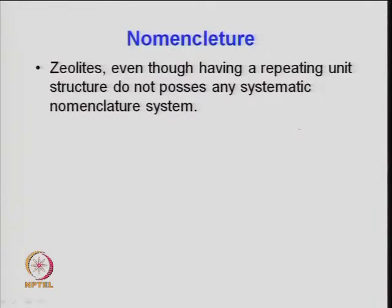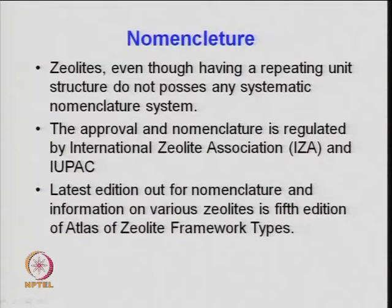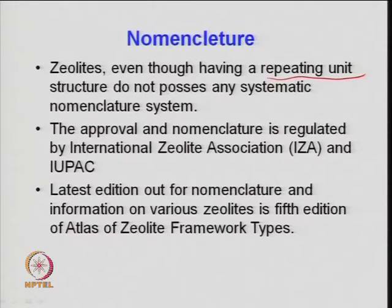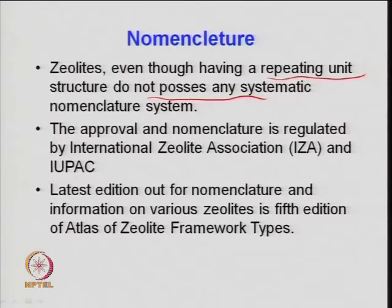Regarding nomenclature, there is no definite system for zeolites — it is just a number specified based on preparation and properties, and it is a proprietary item. The structure has repeated units of silicon and aluminum, but does not possess any systematic nomenclature. Zeolites vary widely in silicon-to-aluminum ratio — from 2 to 500 — and even the names are not well defined.